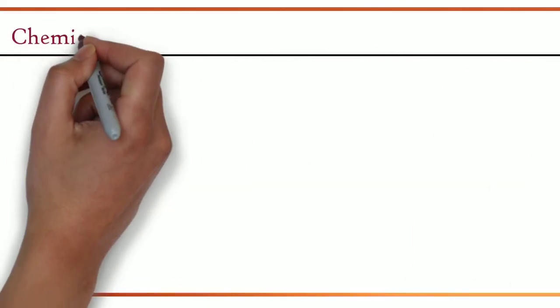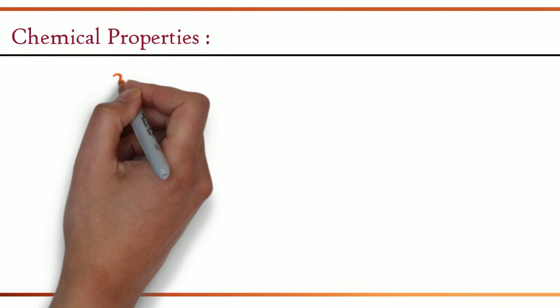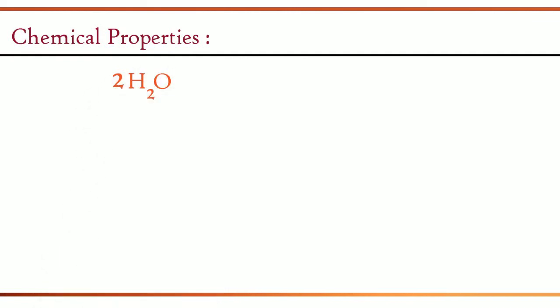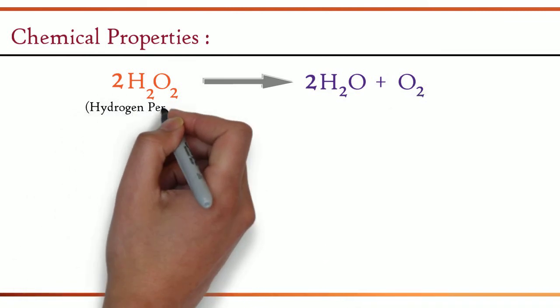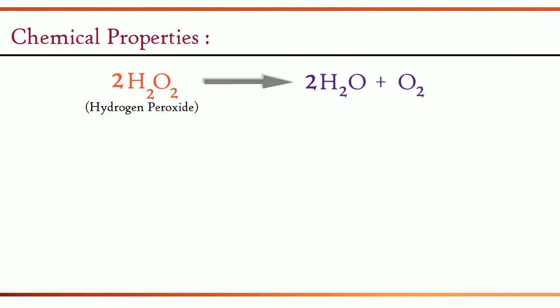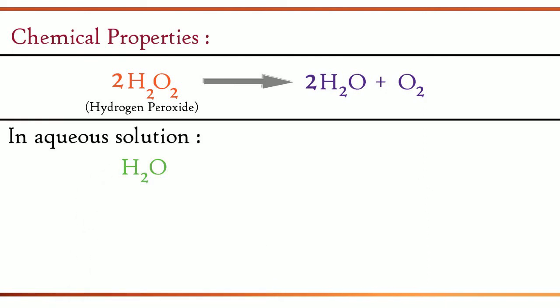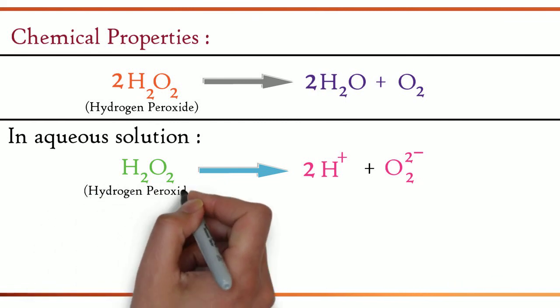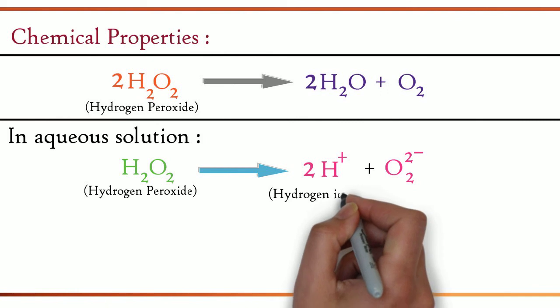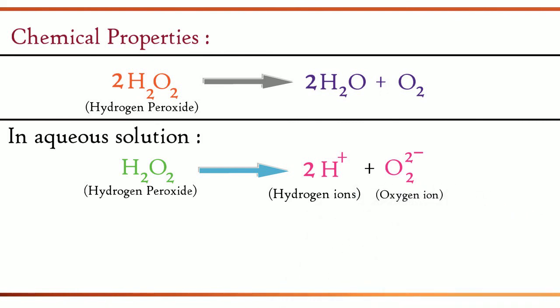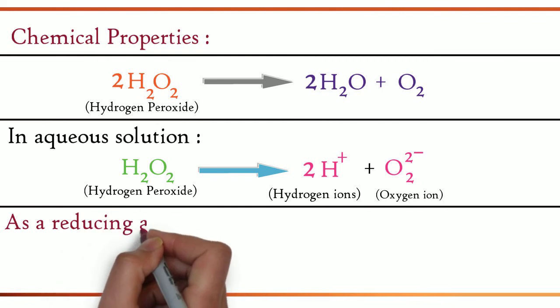Now, let us see the chemical properties. The equation is 2 H2O2 gives 2 H2O plus O2. 2 H2O2 is decomposed into 2 molecules of water and a molecule of oxygen. In aqueous solution, H2O2 gives 2 H+ plus O2 2-. Hydrogen peroxide decomposes into two hydrogen ions and an oxygen ion. It is also used as a reducing agent.